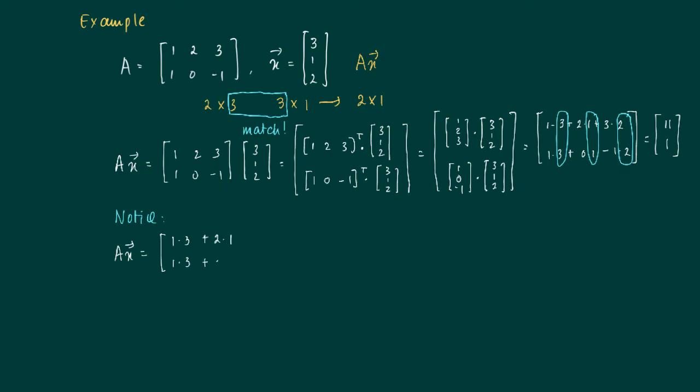So we get 1 times 3 plus 2 times 1 plus 3 times 2 and on the bottom we get 1 times 3 plus 0 times 1 plus minus 1 times 2.